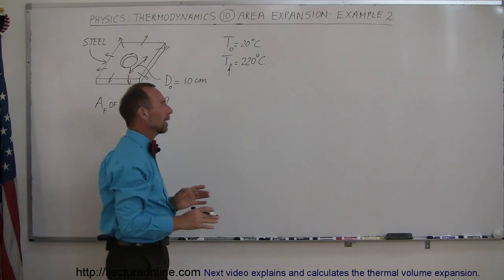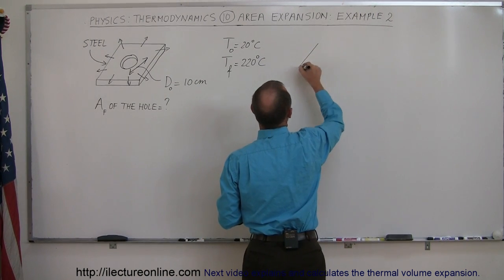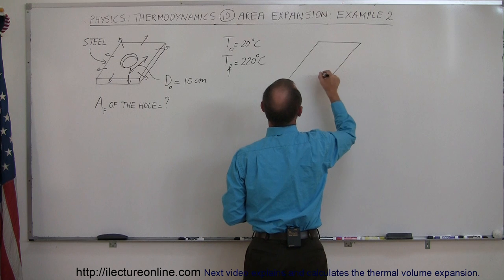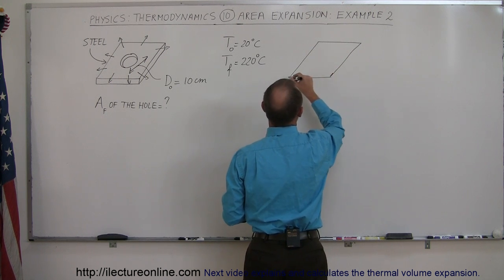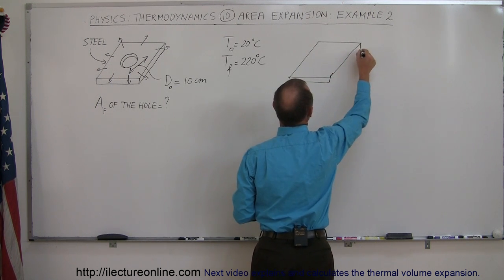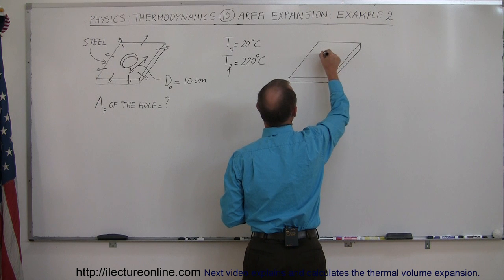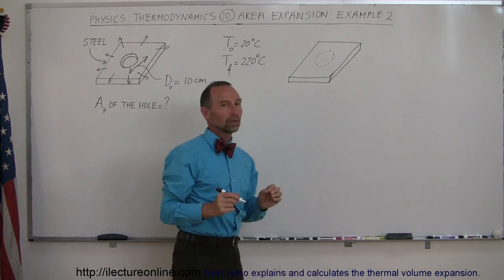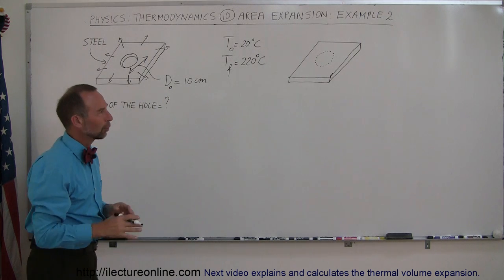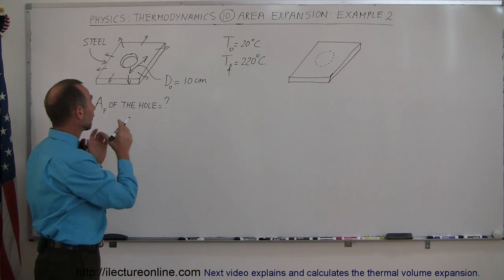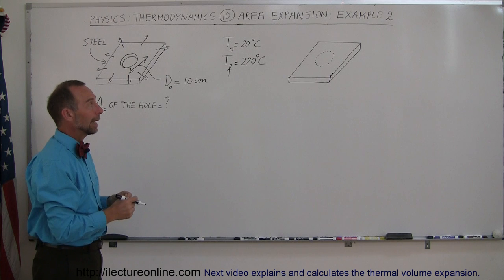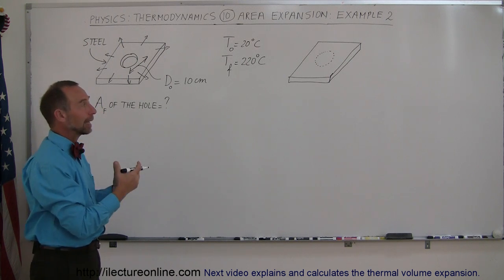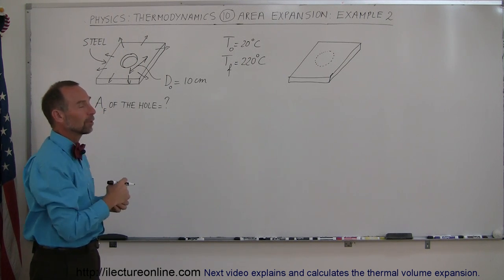The reason for that can be easily understood if, for example, we have a plate that does not have a hole in it and instead what we're going to do is simply, with some paint, paint a hole, not a real hole, just paint a circle of the very same dimension as the hole and then go ahead and have that plate heated up from 20 to 220 degrees centigrade.